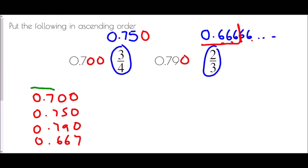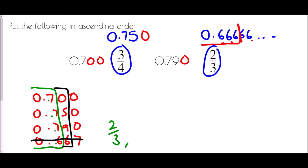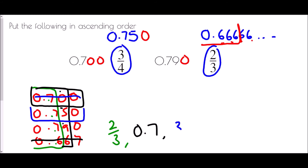Comparing: the first digits are 7, 7, 7, and 6. The smallest must be 0.667, which was two-thirds. Moving on, the remaining second digits are 0, 5, and 9. The smallest is 0, so 0.700 (which was 0.7) is next. Then the five gives us 0.75, which began life as three-quarters. Finally, 0.79 is the largest. We've placed fractions and decimals in the correct ascending order.